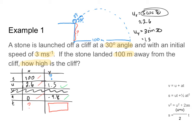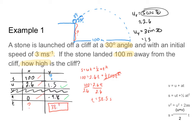Using the equation s equals ut plus one half at squared in the x direction — since it's the only equation without final velocity — s is 100, u is approximately 2.6, and a is 0. Adding one half times zero times t squared gives zero, so the equation simplifies to 100 equals 2.6t. Dividing both sides by 2.6 gives t equal to 38.5 seconds. I plug that into my y SUVAT table, giving me a third piece of information to find my unknown.